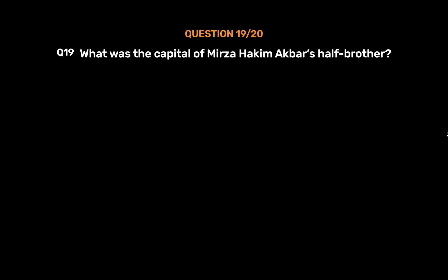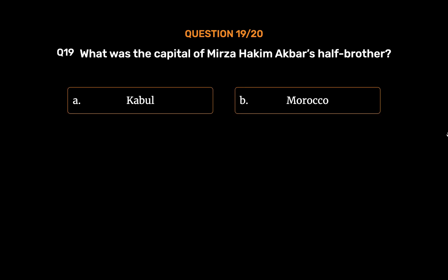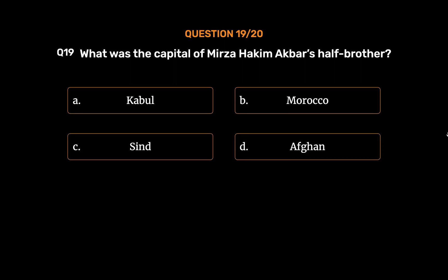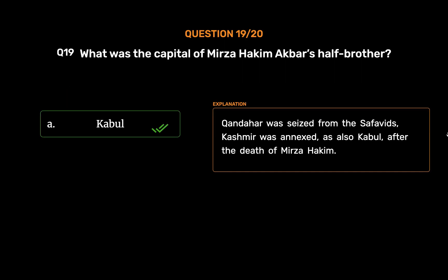Question 19: What was the capital of Mirza Hakim, Akbar's half-brother? Option A: Kabul. Option B: Morocco. Option C: Sindh. Option D: Afghan. The correct answer is Option A, Kabul. Kandahar was seized from the Safavids. Kashmir was annexed, as also Kabul, after the death of Mirza Hakim.